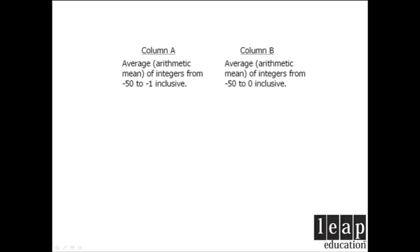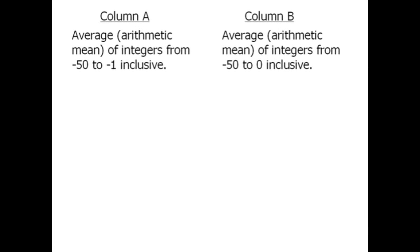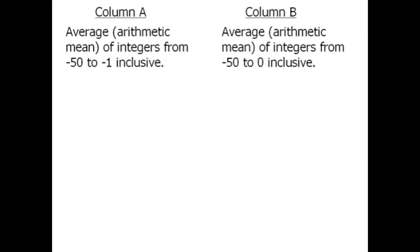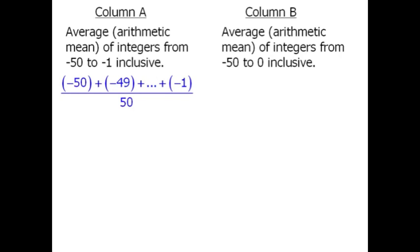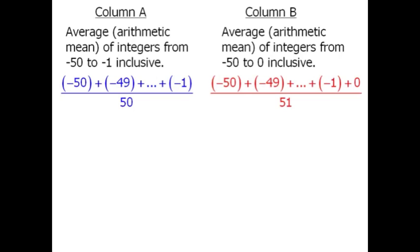Beginning with column A, we'll find the average by adding the numbers from negative 50 to negative 1 and then dividing by 50. For column B, we'll add the numbers from negative 50 to 0 and then divide by 51.